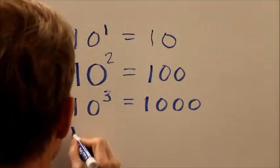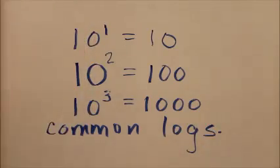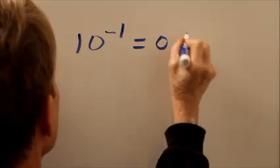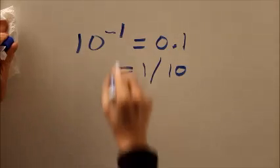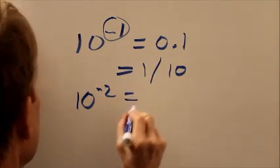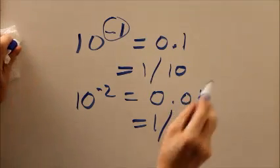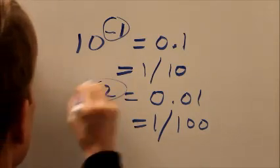So you'll sometimes hear base 10 logarithms called common logs or common logarithms. Well, that's cool. 10 to the minus 1 equals 0.1. That's 1 tenth. So the logarithm of 1 tenth is minus 1. 10 to the minus 2 equals 0.01 equals 1 one-hundredth. So the logarithm of 1 one-hundredth is negative 2.